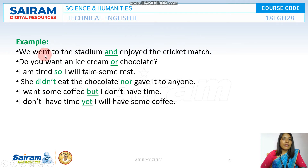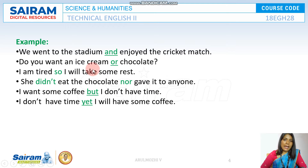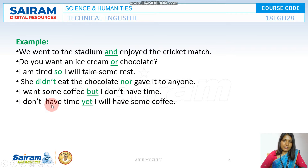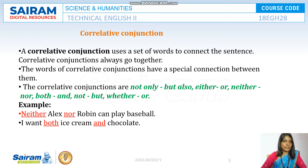Here are some examples of coordinating conjunctions. "We went to the stadium and enjoyed the cricket match." "Do you want an ice cream or chocolate?" — or connects the two choices. "I'm tired, so I will take some rest" — reason and action. "She didn't eat the chocolate nor gave it to anyone" — negative connected by nor. "I want some coffee, but I don't have time" — positive and negative. "I don't have time, yet I'll have some coffee" — negative and positive connected by yet.